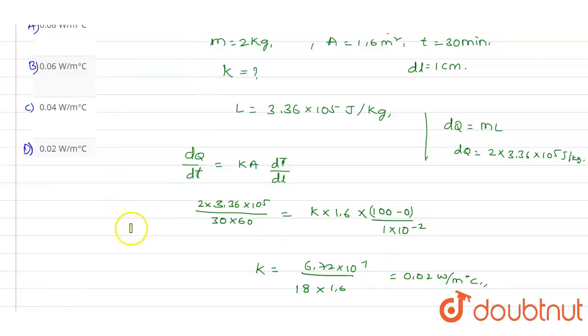So out of these four options if you see option D, 0.02 W per m degree Celsius, which is the correct answer for this question. Thank you.